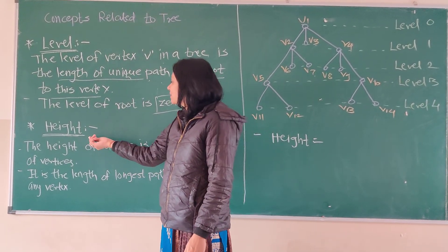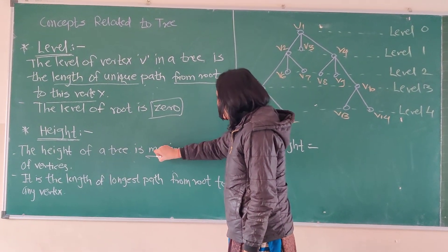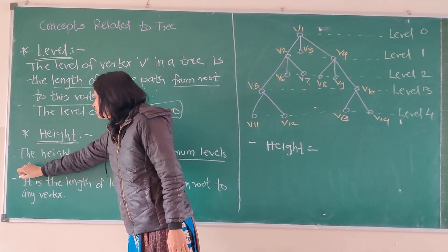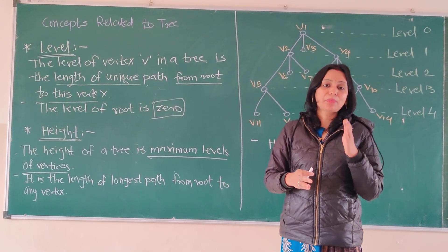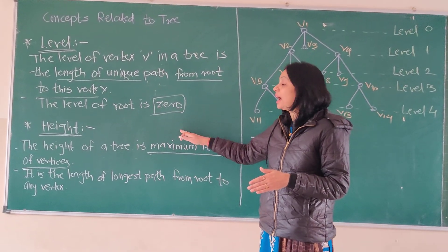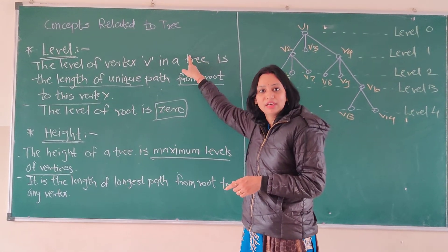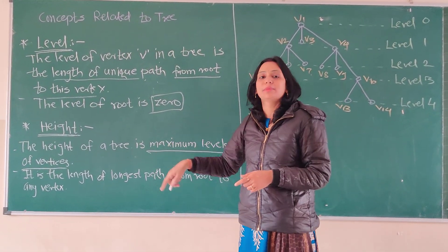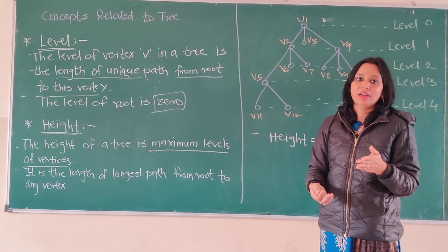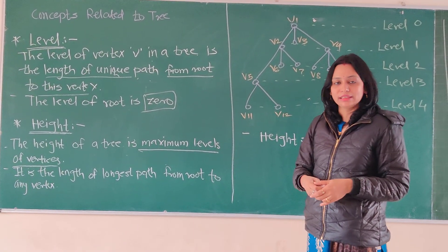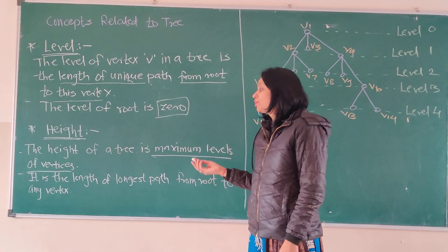Based on this concept of level, our next concept is height. The height of a tree is the maximum level present in the tree. Height is the total number of levels — the maximum level in a particular tree is known as the height. We can also say that it is the length of the longest path from the root to any vertex.